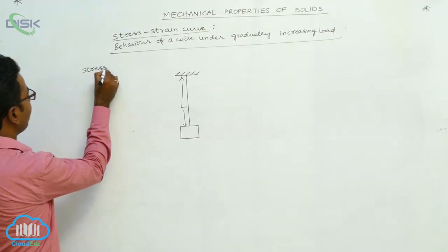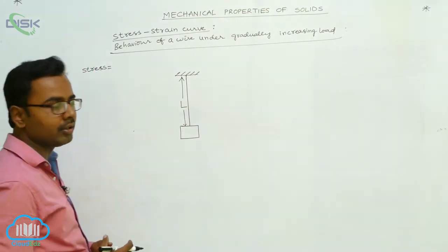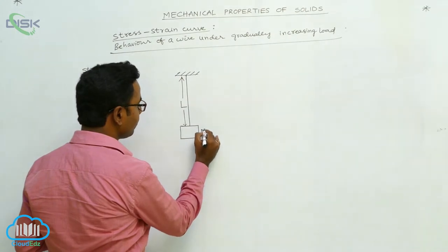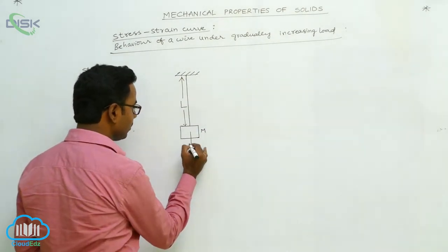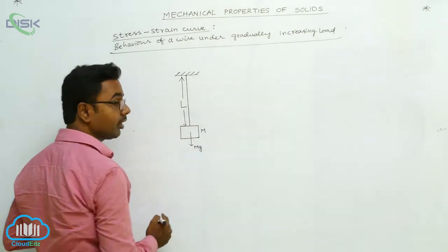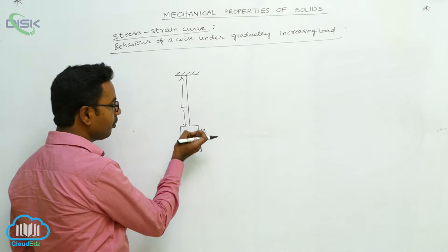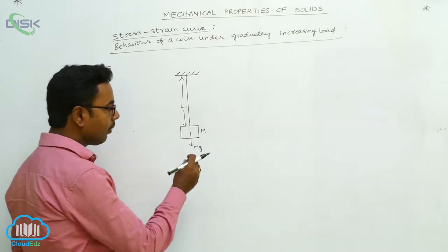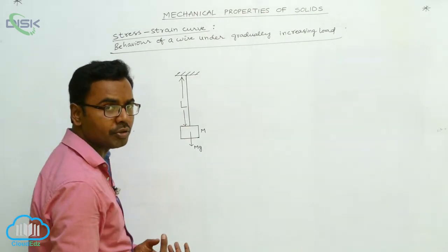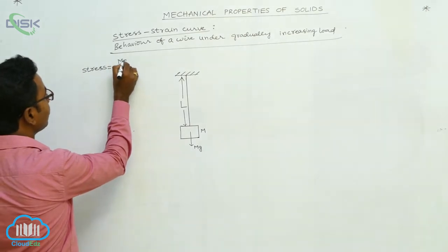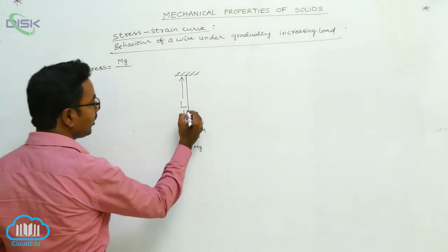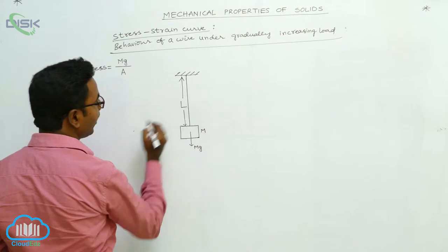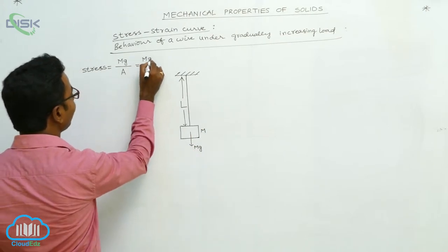Stress is equal to applied force divided by area. On this wire, the force applied is the weight of the load: if the mass of the load is m, then its weight mg acts vertically downward, pulling the wire down with force mg. So stress equals mg divided by the area of cross-section A. If the radius of the wire is r, we can also write stress as mg divided by πr².